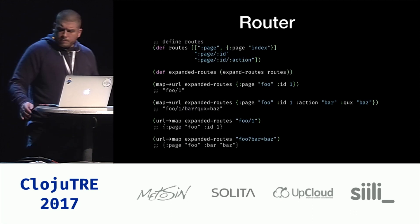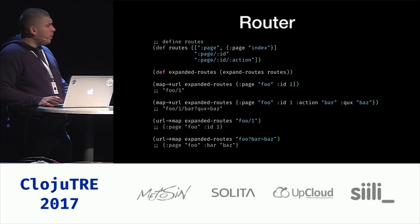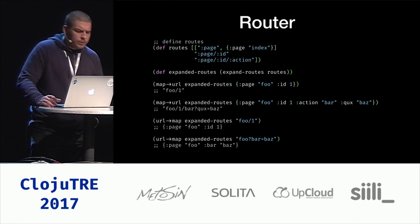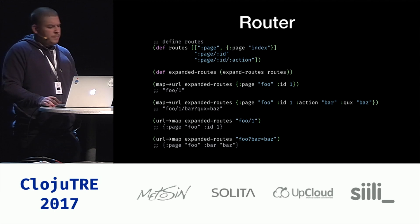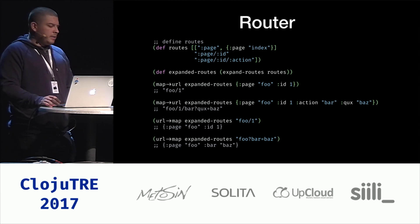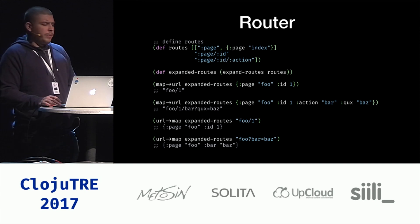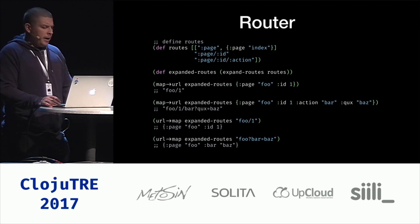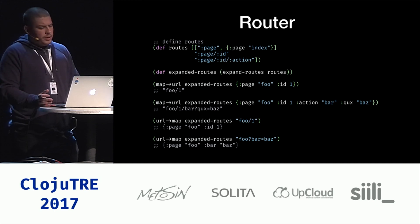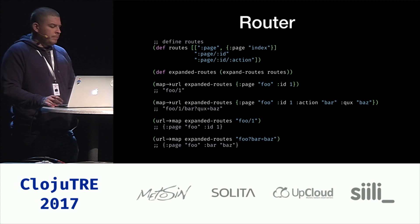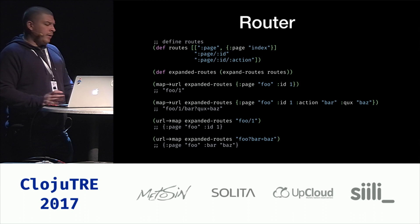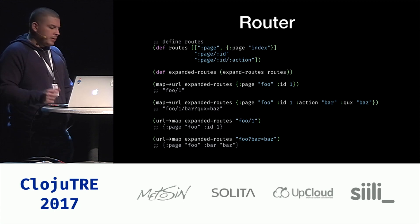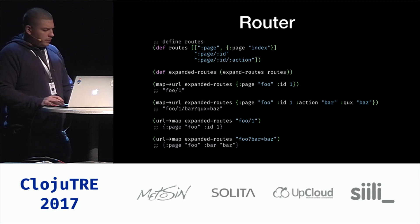Before I continue with the architecture, I want to quickly show you the API of the router. The router implements two main functions: map-to-URL and URL-to-map. As you can see, you can define some patterns that will be used to serialize and deserialize the route. When you give it the map, you get back the string. Any key not found in a route pattern will be serialized as a query param, which we very often use to store things like filter params or paging params.